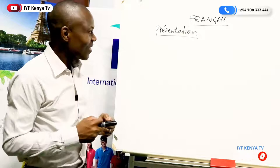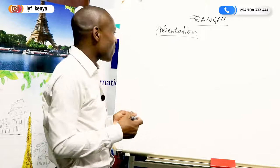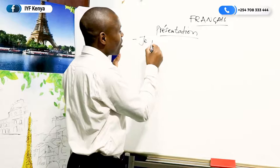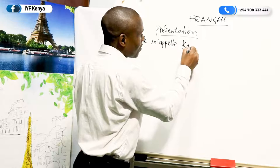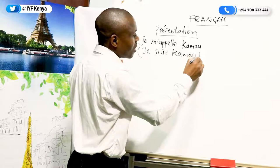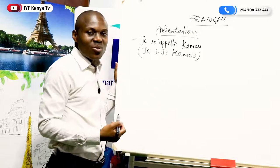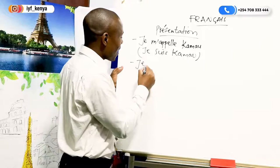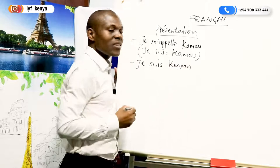Now, how can you introduce yourself? Let's say you are a Kenyan and your name is Kamau, for example. You will say: je m'appelle Kamau — which you can also say as je suis Kamau. It's like English: if you say my name is Kamau, you can also say I am Kamau. Then, I am a Kenyan: je suis Kenyan.